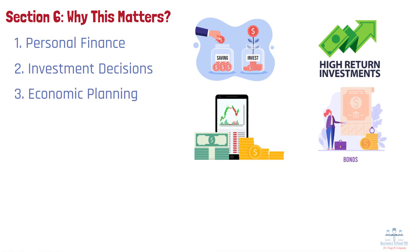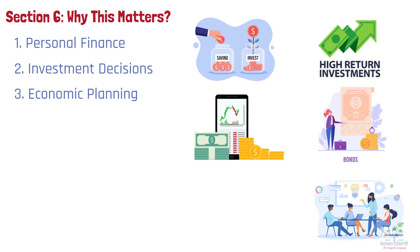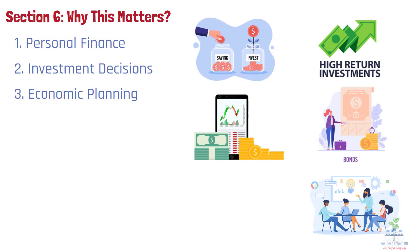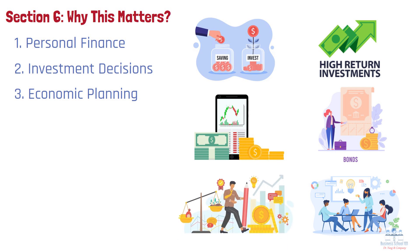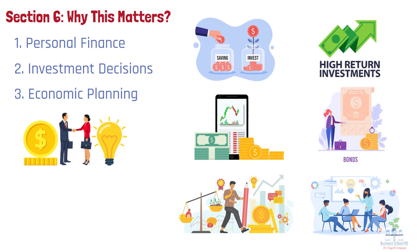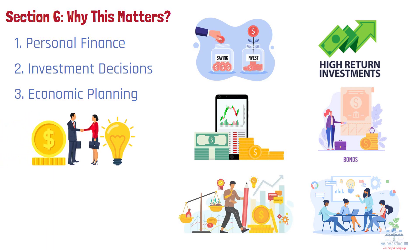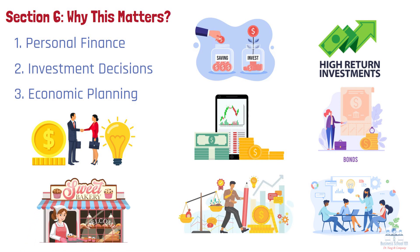Number 3: Economic Planning. Businesses and governments rely on inflation data to make informed decisions about spending, pricing, and policymaking. For example, a government might adjust interest rates or issue inflation-linked bonds to manage economic stability. Similarly, a business might increase prices or adjust wages to maintain profitability and competitiveness. For instance, a bakery might increase the price of bread by 5% in response to rising flour costs due to inflation.